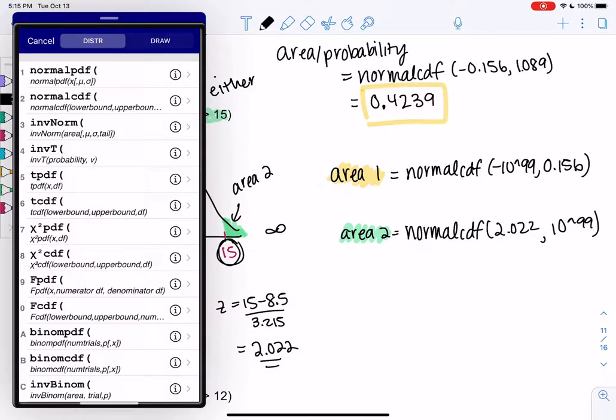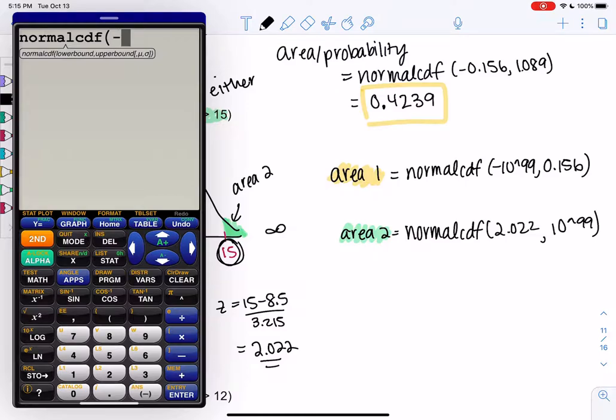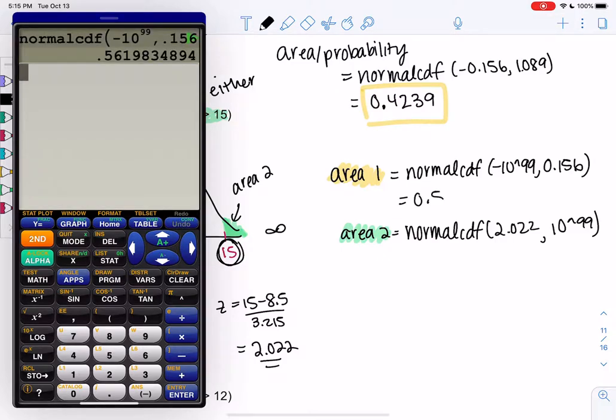So second distribution, normal CDF. Negative 10 to the 99, 2.156. And we get 0.5620 for the first area.